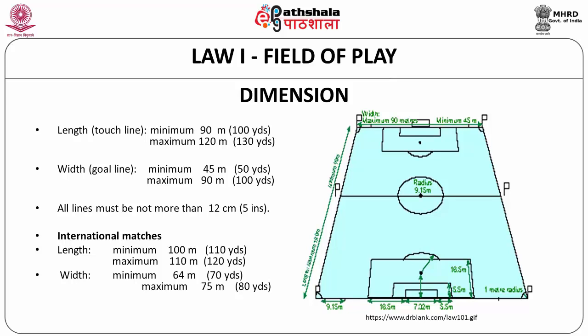In international matches, the length of the field should have a minimum of 100 meters and a maximum of 110 meters. The width of the playing field should have a minimum of 64 meters and a maximum of 75 meters. The touch line must always be longer than the goal line.